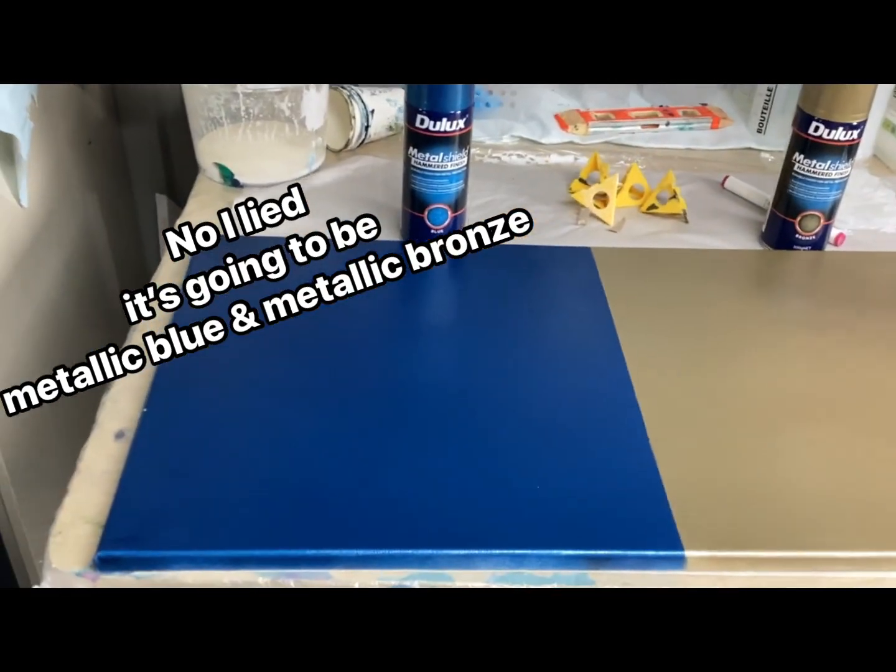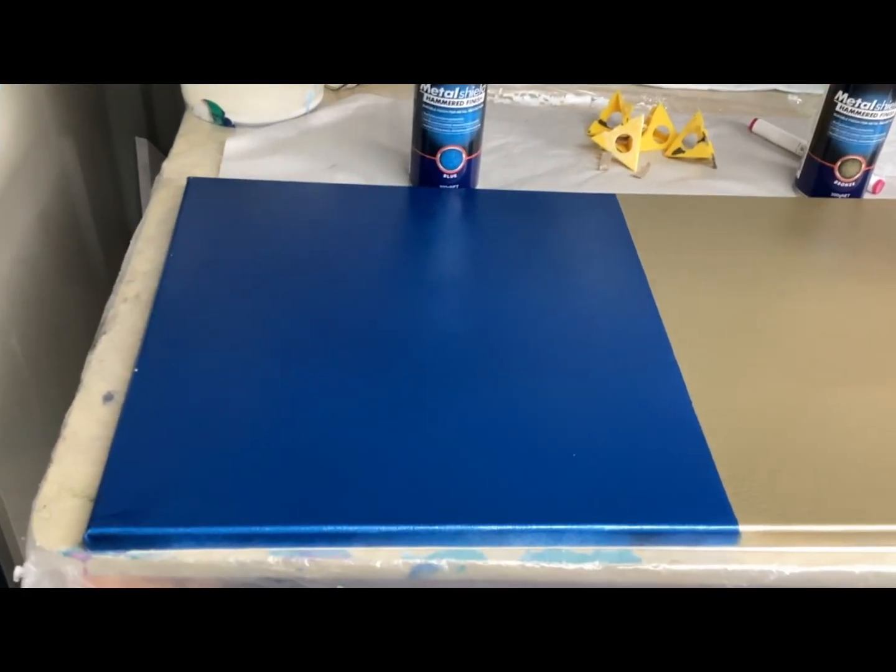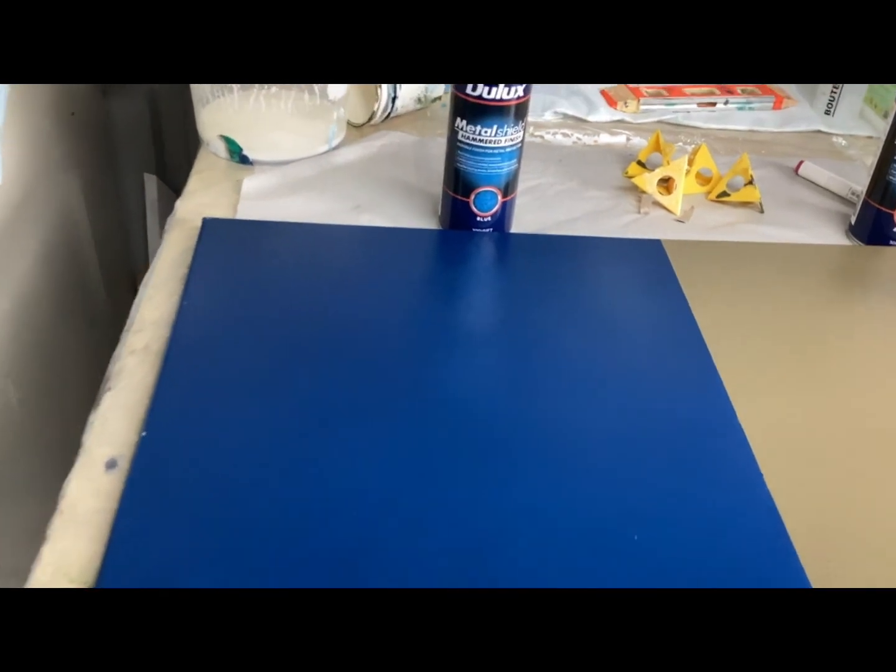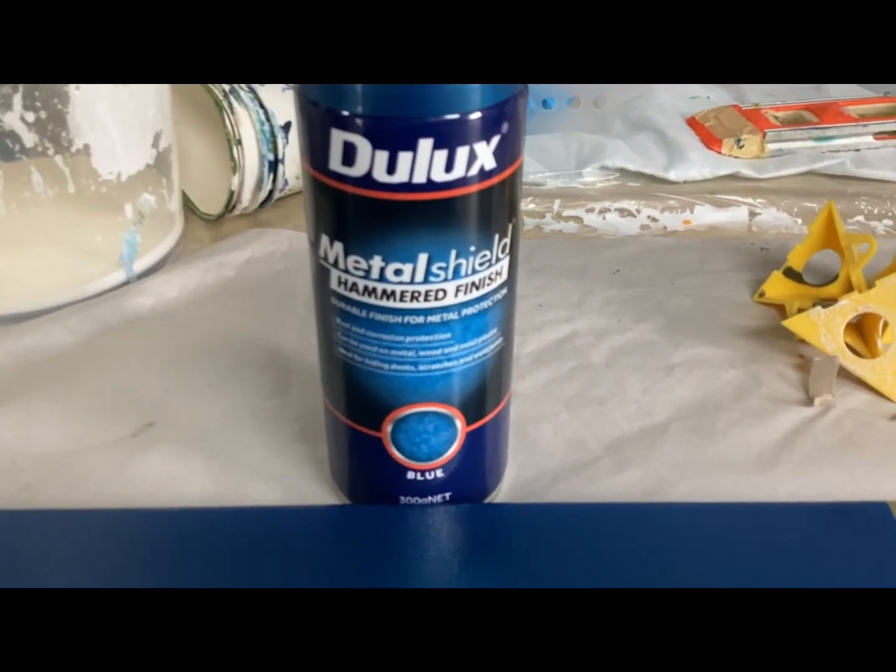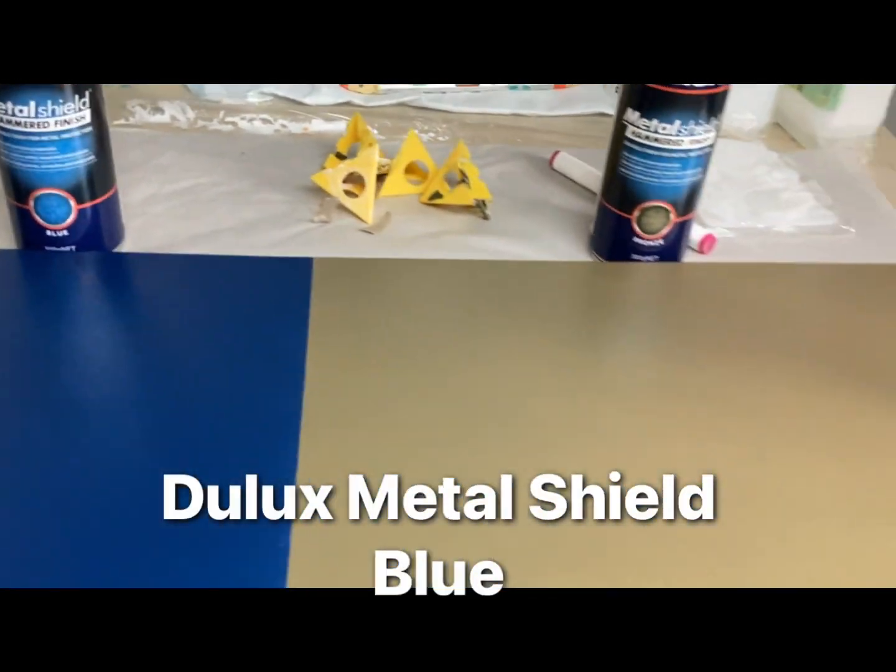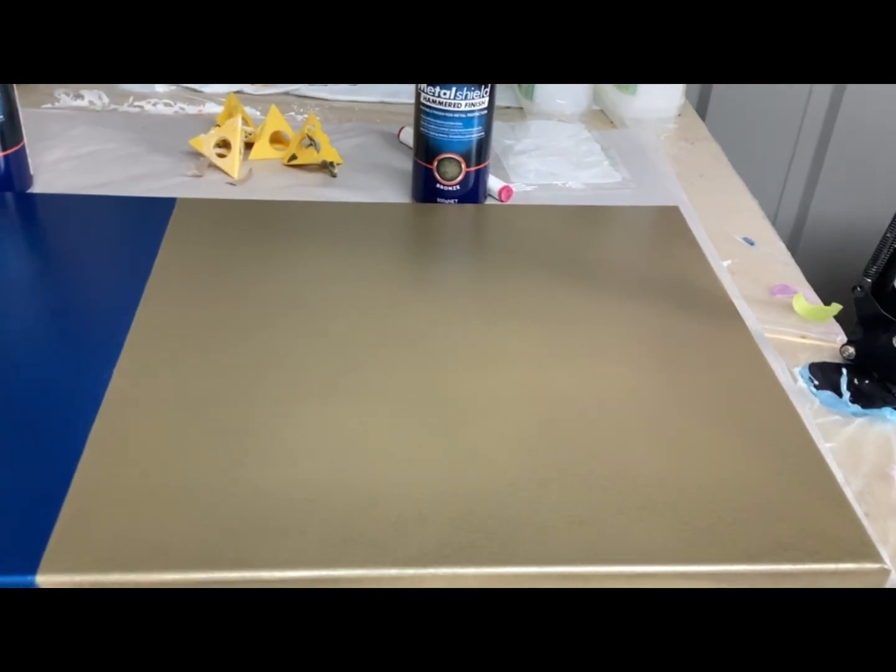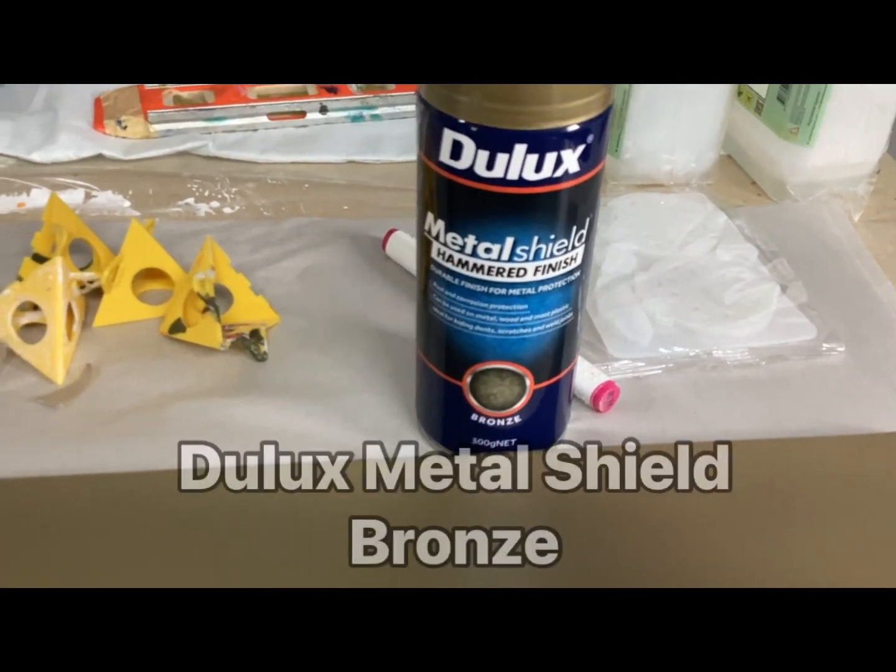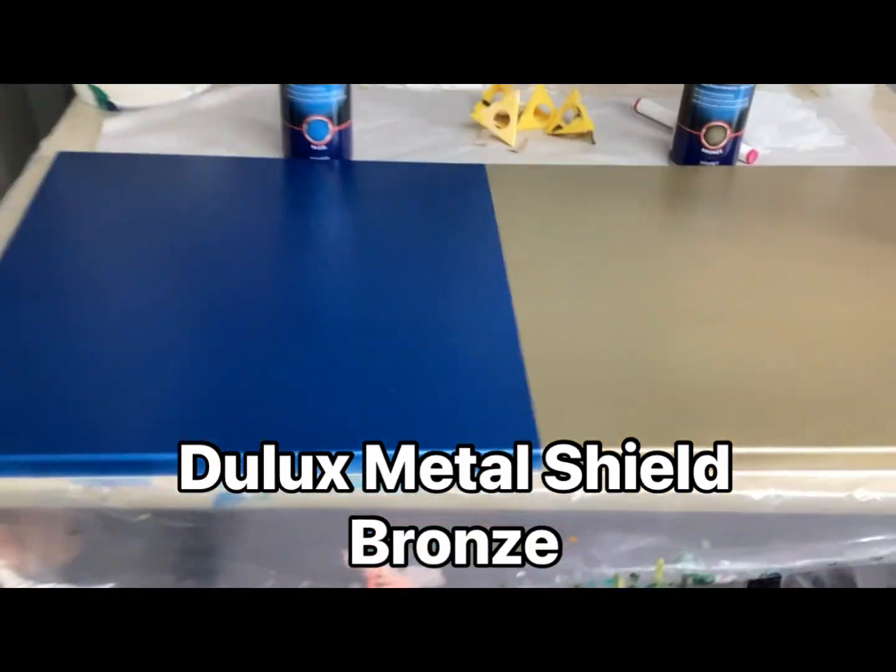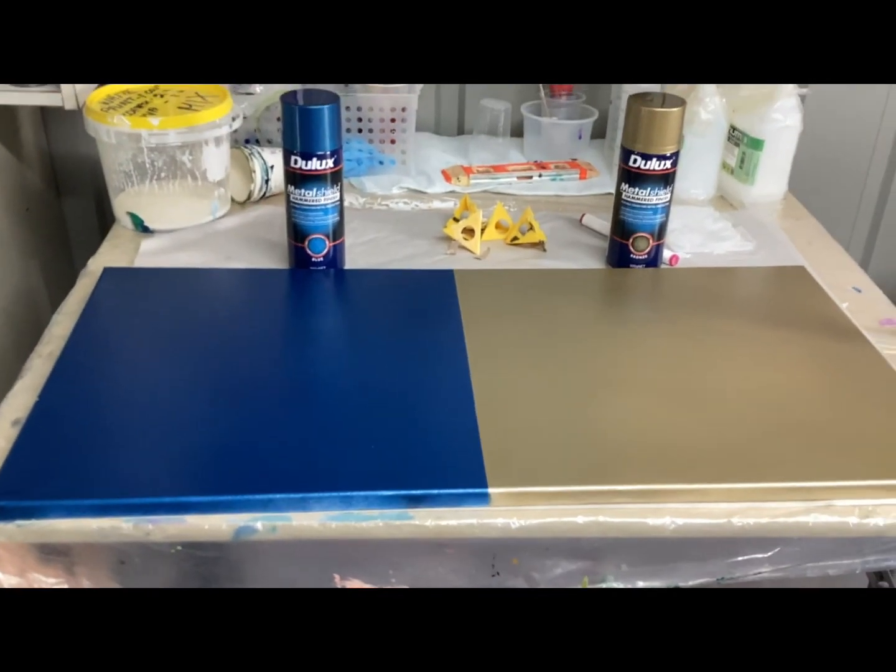Spray painted the front, half this half and the side edges in Dulux Metal Shield in blue, and this side I've already sprayed in Dulux Metal Shield bronze. So that's my base that I'm going to be working on today.